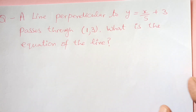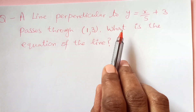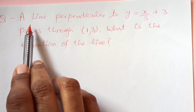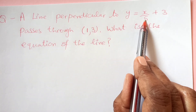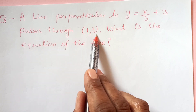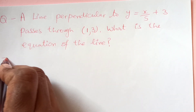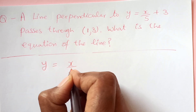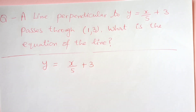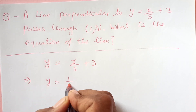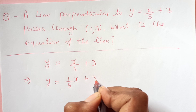Let's take some examples based on the parallel and perpendicular lines concept from the previous video. We have a line perpendicular to y = x/5 + 3 that passes through (1, 3). What is the equation of the line? First, write down the given equation: x/5 + 3, which can be written as (1/5)x + 3.